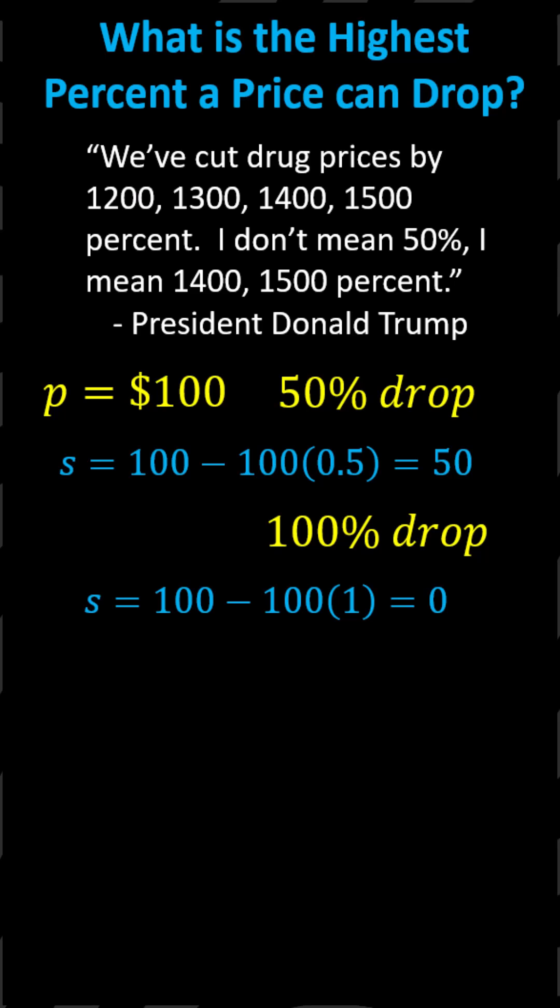For example, if the price drop was 1,200%, 1,200% as a decimal is 12, giving a sale price of negative $1,100, which means the drug company would be giving you $1,100 to take their drug, which of course we know they don't do.